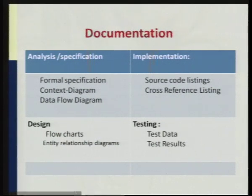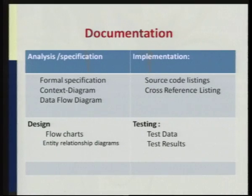What is to be documented within analysis specifically? With analysis, we need a formal specification and a context diagram, where we give the entire context. For example, for a student result management system, the context diagram clearly represents the different inputs required and the possible set of outputs. As a third stage, we draw a data flow diagram showing how the exact flow is carried out. These first three levels of specification are mentioned in the analysis and specification model, then we go for the design principle.